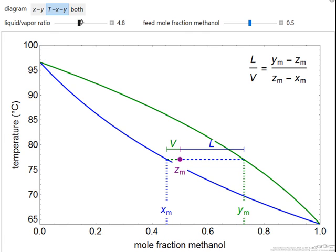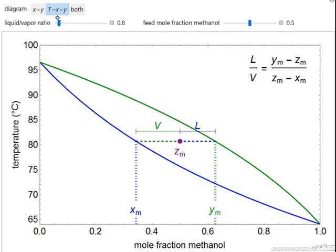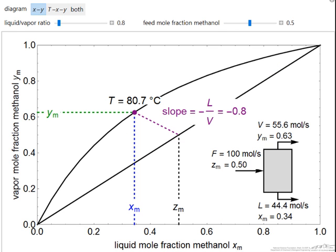If we change that ratio, keeping zm constant, then of course we have to change the temperature to satisfy the criteria. We're just using essentially the lever rule here.